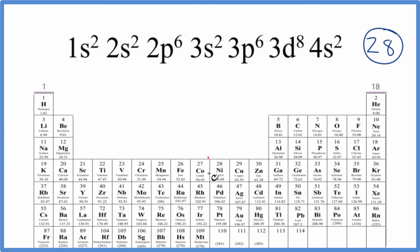So we just find number 28, here's atomic number 28, and that is nickel. So this is the element represented by this electron configuration.